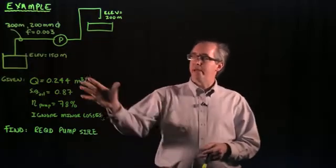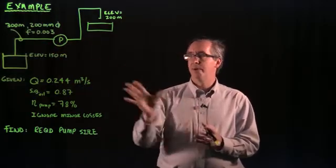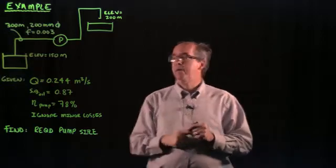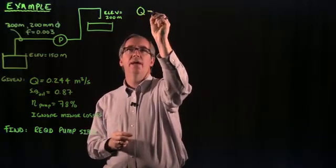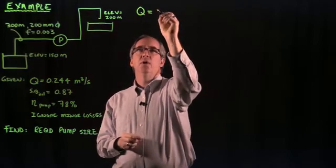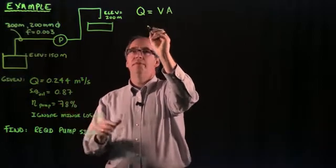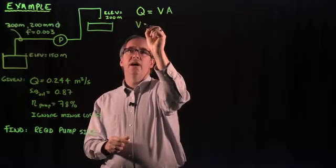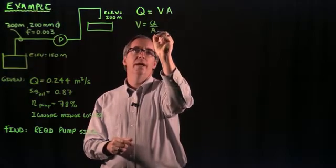Looking at this problem, when I see that there's going to be head losses I know that I'm going to need a velocity term, so I'm going to go ahead and solve for that. Looking at the continuity equation, conservation of mass, we know that flow is equal to velocity times the area.